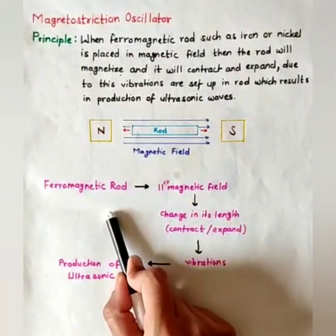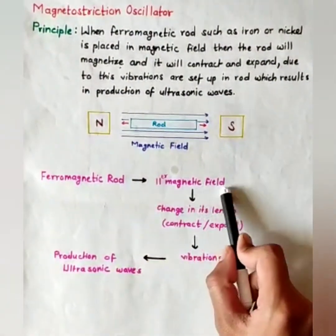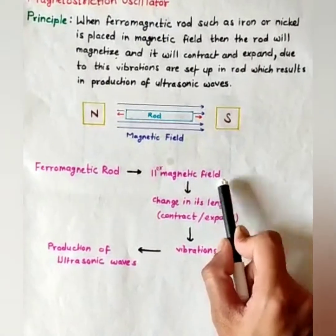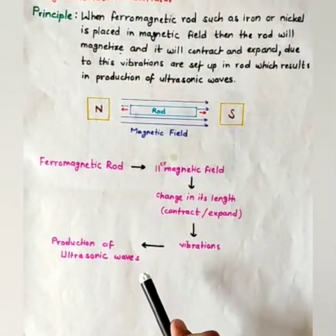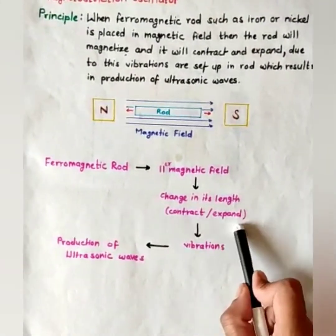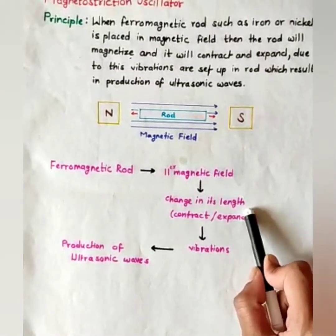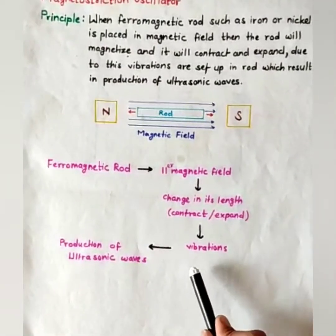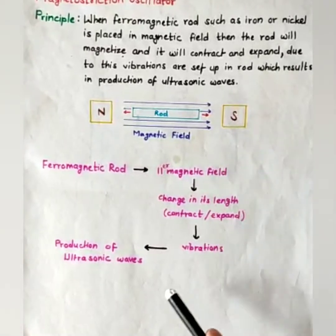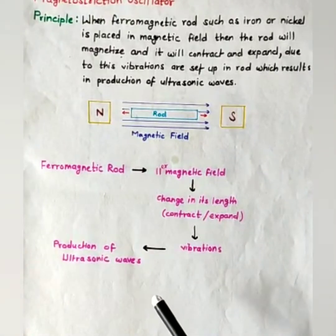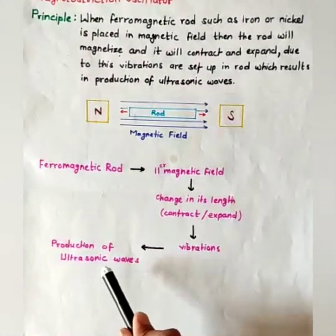When ferromagnetic rod is placed in magnetic field, this rod will magnetize and demagnetize. Hence, it will contract and expand which results in change in its length. And hence, vibrations are set up in this ferromagnetic rod and at higher frequency, it results in the production of ultrasonic waves.